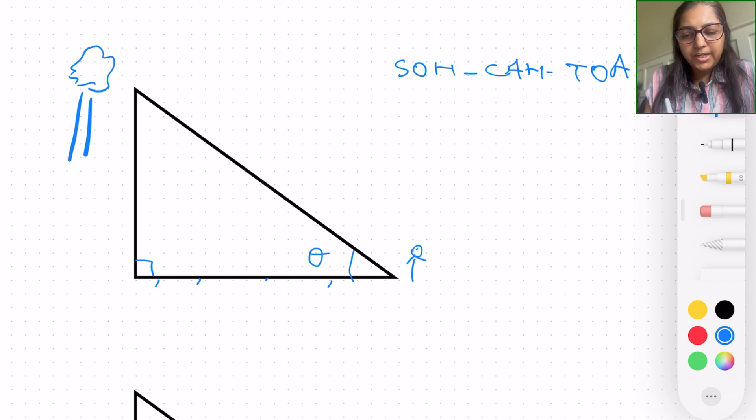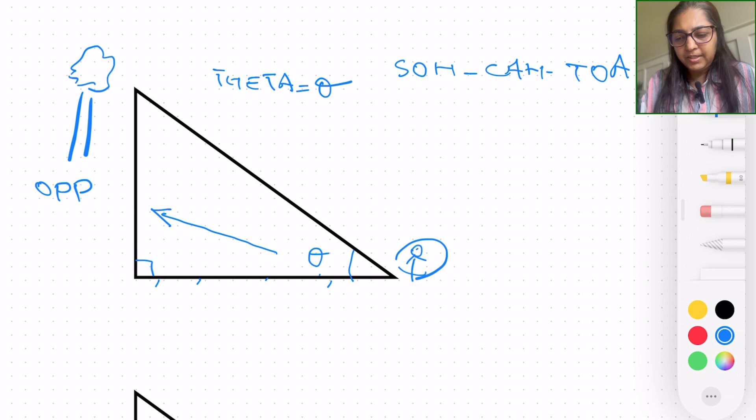Let's understand what this means. Theta, this symbol right here that I've taken for the angle, is called theta. It is a Greek alphabet usually utilized to represent angles. When we are standing right here, with reference to this angle, the side that is opposite is called the opposite. The side that is adjacent with reference to the angle is adjacent.